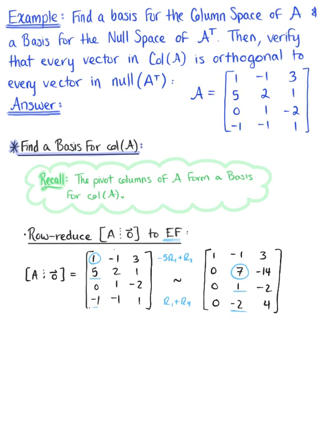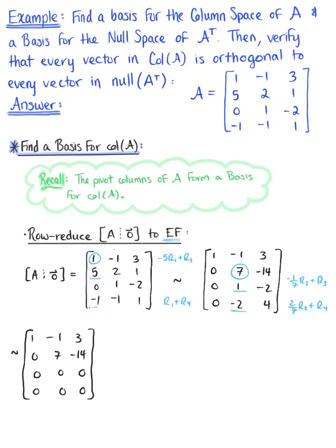We do -1/7 times the second row plus the third row, and 2/7 times the second row plus the fourth row. This leaves us with the equivalent matrix: rows 1 and 2 remain, and the last two rows get canceled out entirely, giving us two rows of zeros. We have reached echelon form, and we can see that there are pivot positions in the first two columns.